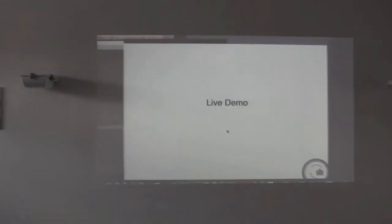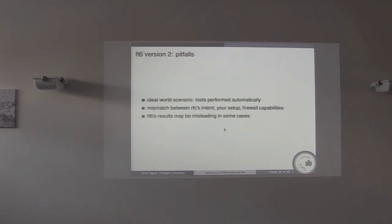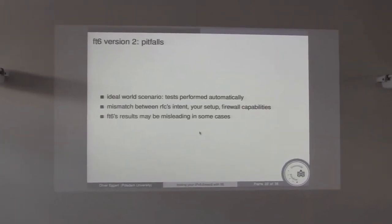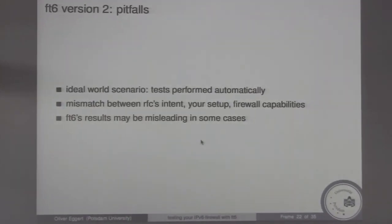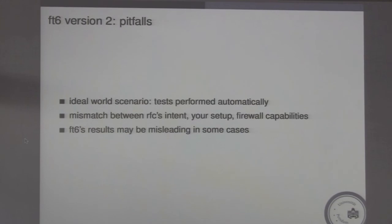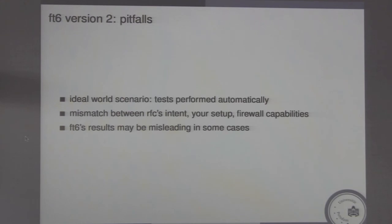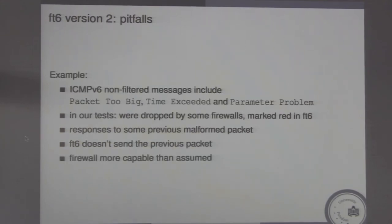We are currently writing version 2, because we've encountered some pitfalls we didn't anticipate. In an ideal world, tests would be performed automatically, know your configuration file, and automatically point you to the correct rule. But that didn't work, because there's a mismatch between what your firewall is capable of, your setup, and what the RFC's intent is. FT6's results may therefore be misleading in some cases.